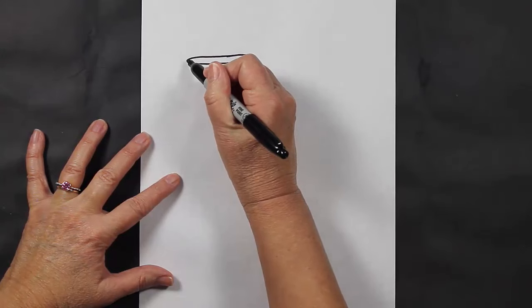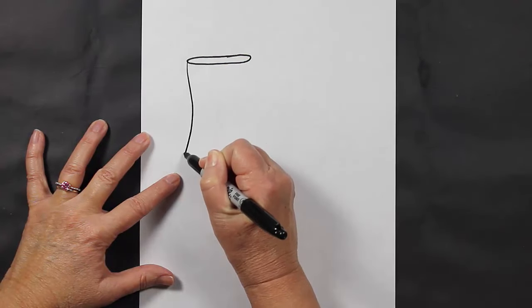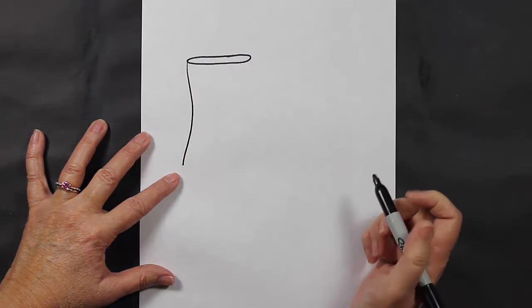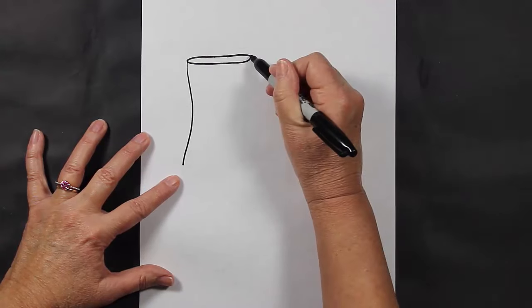Now we're going to come down to about here and make a line that curves in slightly and then comes out. That's going to be the back of the shoe. And for the front of the shoe, we're going to come down and curve around just like that—it's a curved line.